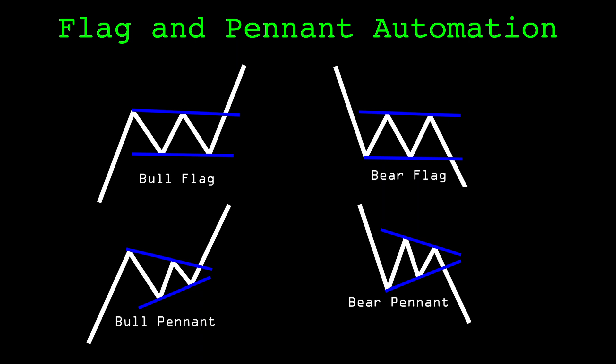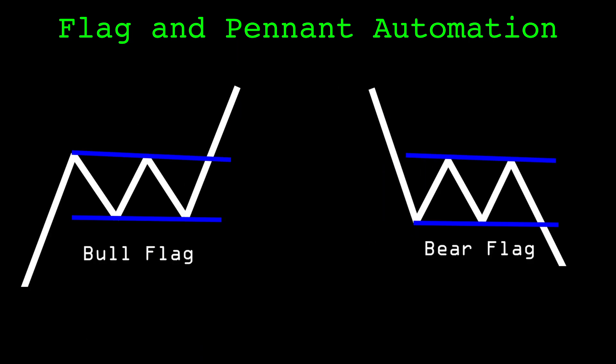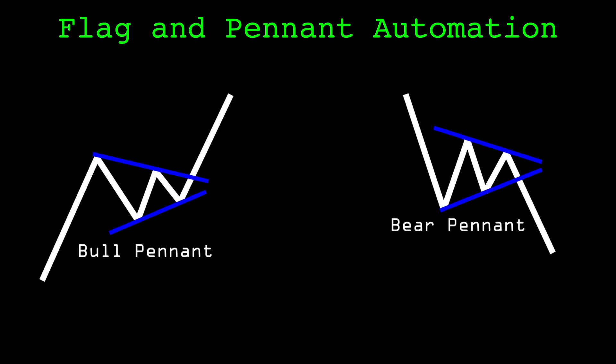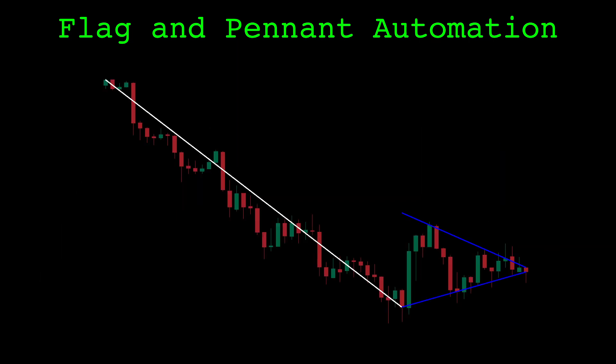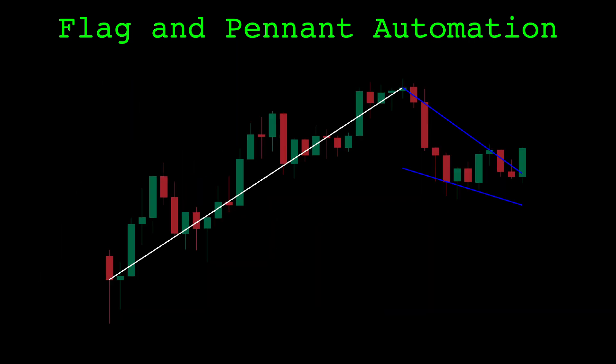The flag and pennant patterns are very similar. They both describe a brief interruption in a trend before it hopefully continues. A flag has two roughly parallel trend lines creating a price channel opposite of the prevailing trend, while pennants have converging bounding lines with a negative and positive slope. I'm not terribly interested in these distinctions, rather I'm interested in the core idea that all these patterns embody.